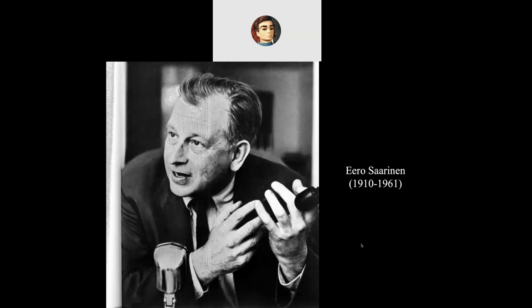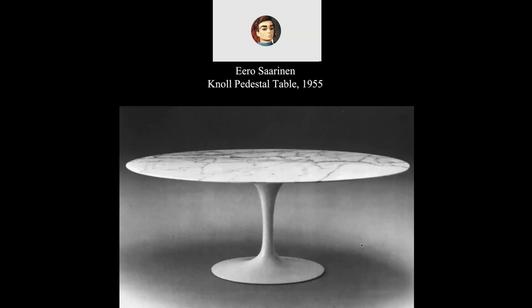Eero Saarinen — his father Eliel Saarinen was a well-known modernist architect. Saarinen designed furniture for Knoll. He and Florence Knoll had known each other when they were young, and when she took over Knoll, Eero Saarinen was one of the designers she recruited. He is the author of the famous pedestal furniture. He had an aversion to seeing so many chair and table legs that he thought of it as a 'forest of legs,' so he designed the pedestal furniture to clean that up.